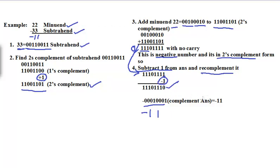This is indeed the required answer, because 22 minus 33 is minus 11. This is how we can perform two's complement subtraction. The main important point is subtracting a larger number from a smaller number. Thank you for watching this video — if you like it, kindly subscribe to see more related videos.